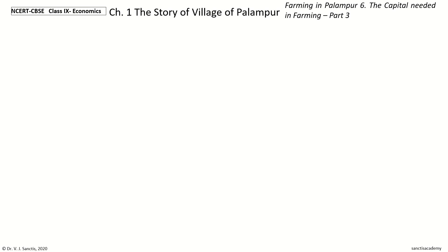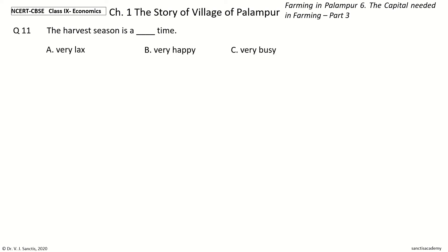Question 11. The Harvest season is a Dash time. The options are: Very Lax, Very Happy, Very Busy, Very Troubled. And the answer is Very Busy. So, the harvest season is a Very Busy time.